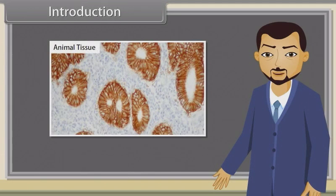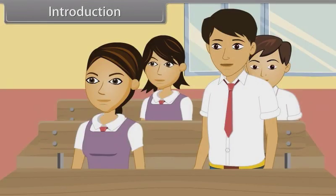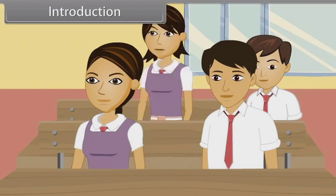All the animals are made up of tissues. Sir, how many kinds of tissues in animals are present? There are four types of animal tissues. Sir, are the organs in the human body also made of tissues?